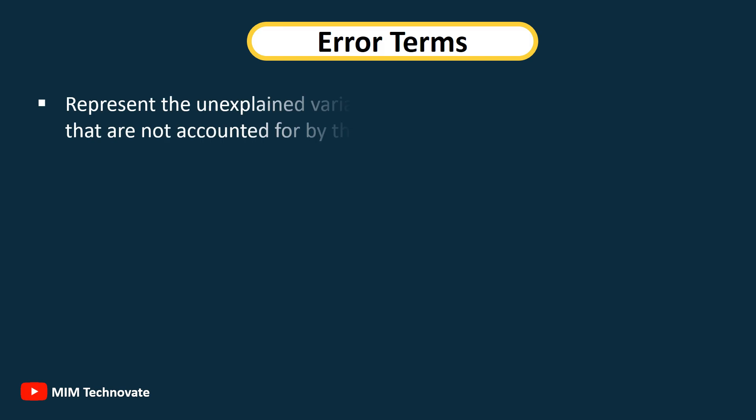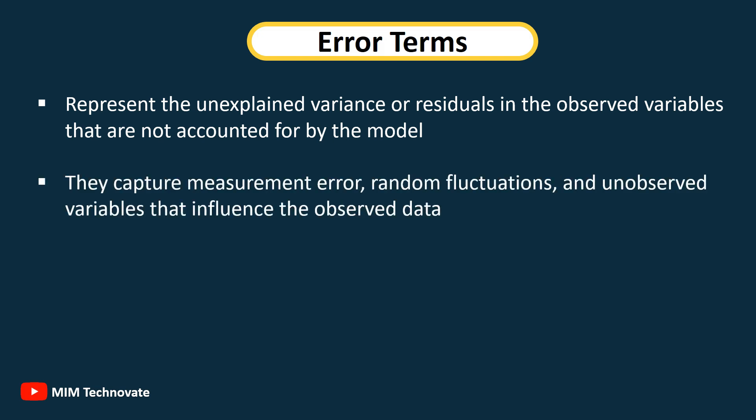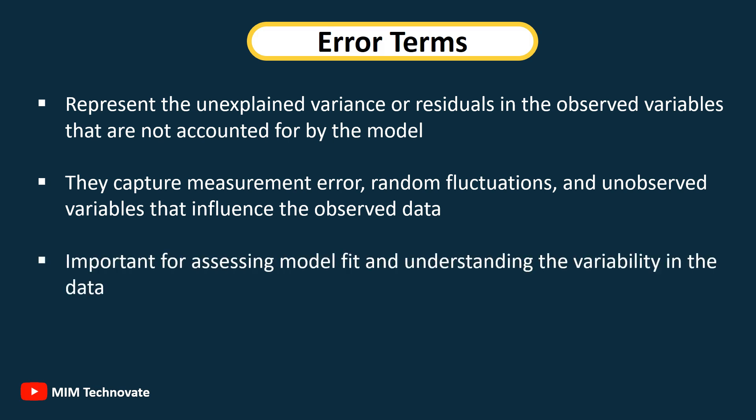Error Terms: Represent the unexplained variance or residuals in the observed variables that are not accounted for by the model. They capture measurement error and unobserved variables that influence the observed data. Error terms are important for assessing model fit and understanding the variability in the data.